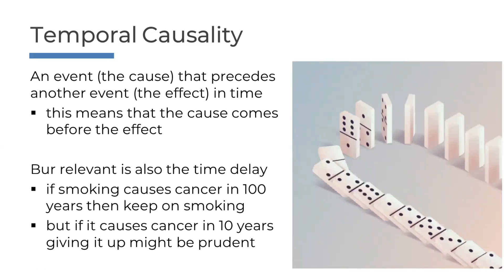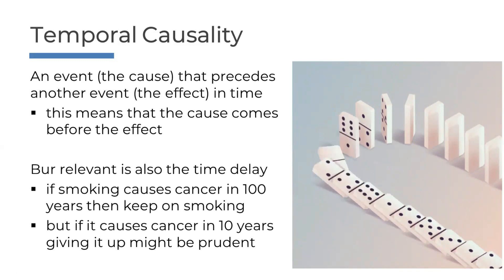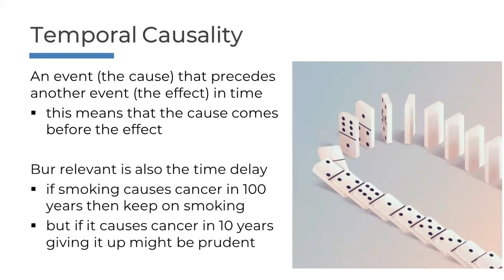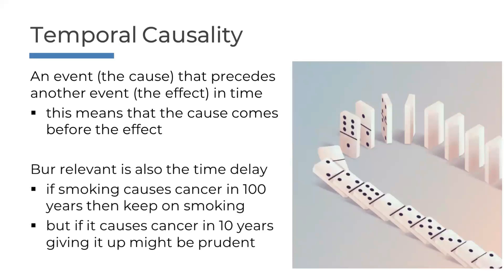When you see dominoes falling, the time delay was short enough for all those dominoes until the one that doesn't fall anymore. The time delay — or in this case, the spatial delay — was longer. That's the whole point: you need to set the right time delay to figure out cause and effect.